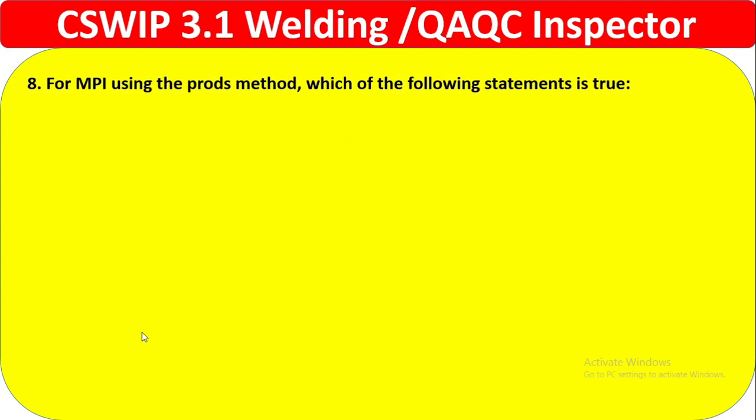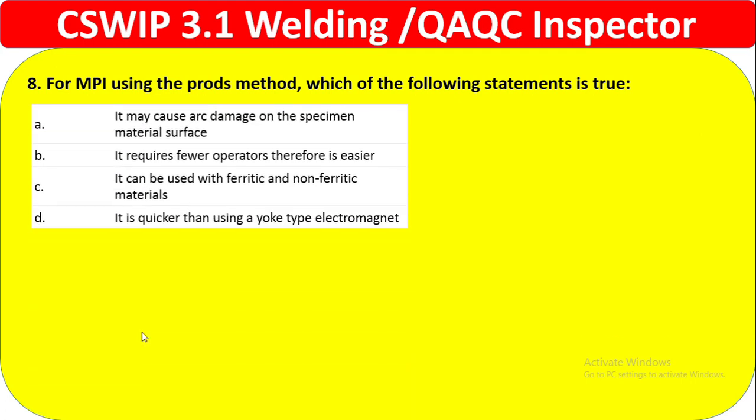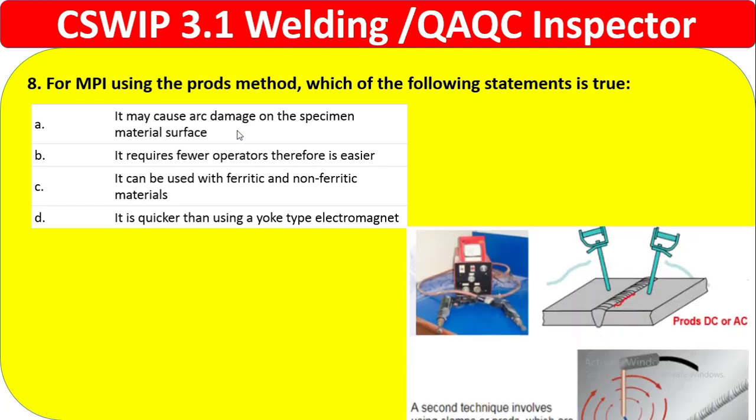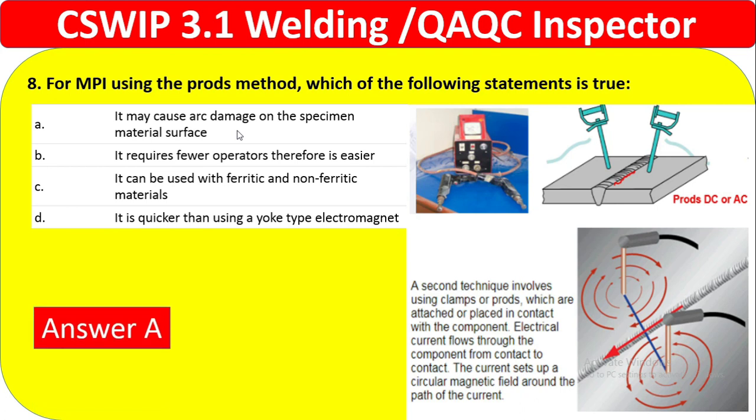Question 8: For MPI using the prods method, which of the following statements is true? Option A — it may cause arc damage on the specimen material surface. Option B — it requires fewer operators, therefore is easier. Option C — it can be used on ferrite and non-ferrite material. Option D — it is quicker than using an electromagnetic yoke type. Option B is not correct as operators still need professional skills. Option C is wrong as MPI is only for ferromagnetic material. Option D is incorrect. The correct answer is A — it may cause arc damage on the specimen surface.